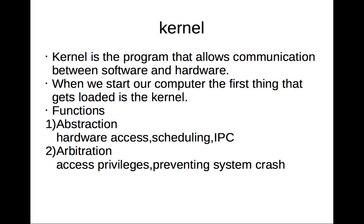The functions of the kernel are abstraction and arbitration. Abstraction means that the kernel helps the user to access the hardware. It also takes care of scheduling — if many processes are executing simultaneously, the kernel will manage how they will be executed using certain scheduling algorithms. The kernel also helps with inter-process communication: if two processes, whether application or system processes, want to communicate with each other.